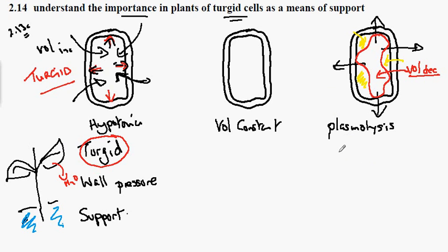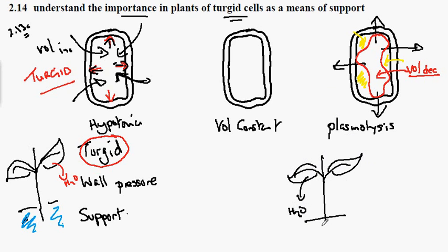On the other hand, if our plant experiences a high rate of water loss or insufficient water in the roots to take up — so if there's insufficient water or a lot of transpiration with a great deal of water loss — the volume of the cytoplasm will decrease.